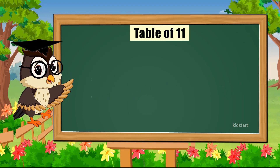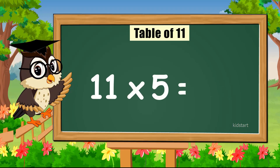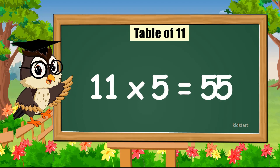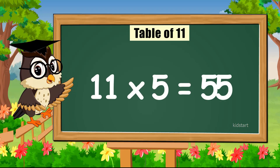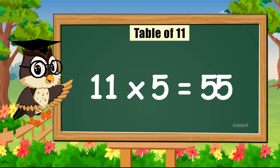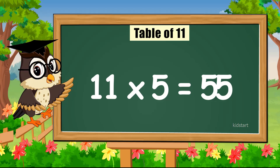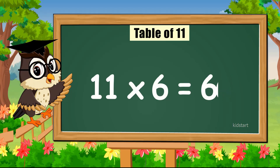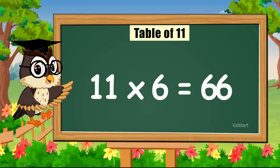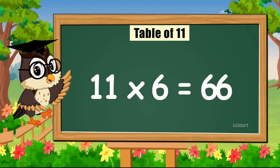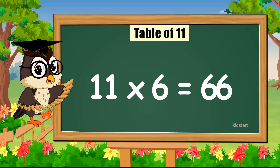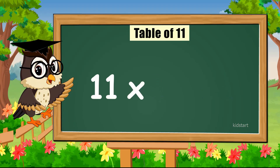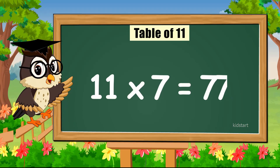Eleven times three is thirty-three. Eleven times four is forty-four. Eleven times five is fifty-five. Eleven times six is sixty-six.